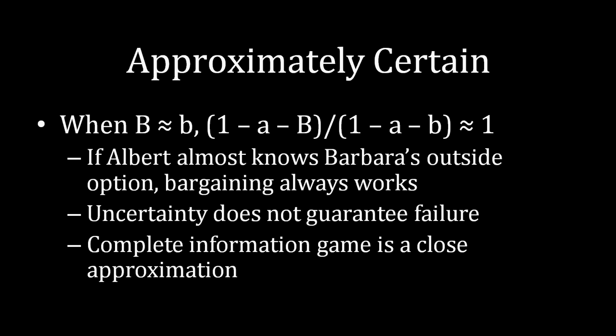And so Albert will always be making that safe offer in that case. So what is that? Well, if Albert almost knows Barbara's outside option, when uppercase B is relatively equal to, very close to being equal to b, then we know that bargaining always works. Albert always makes that safe offer and guarantees acceptance. Now there are two implications here.